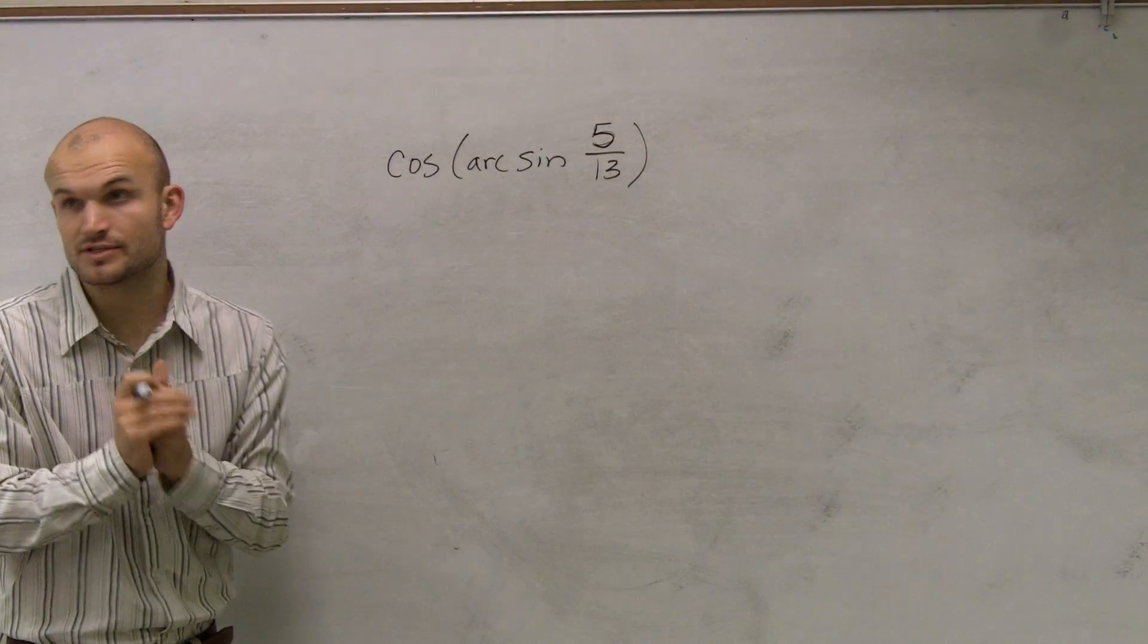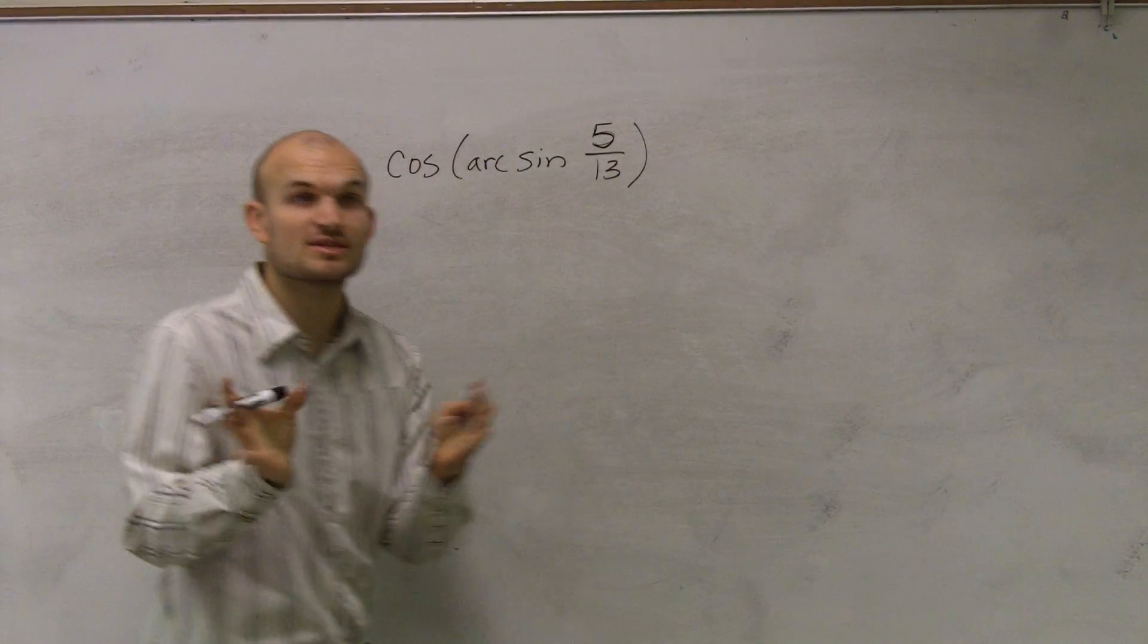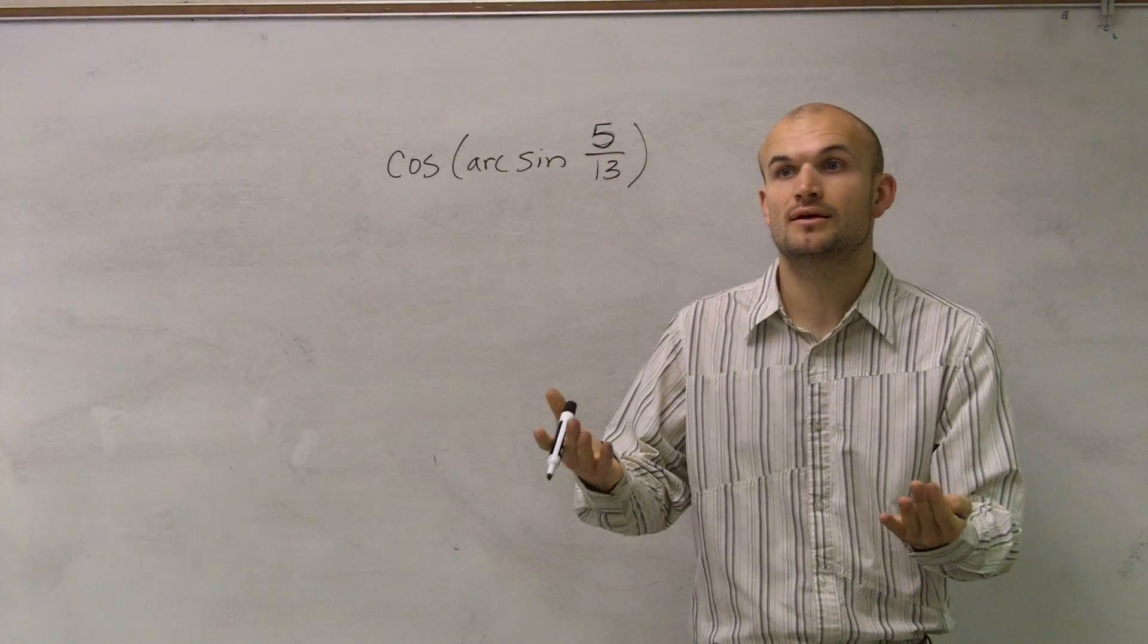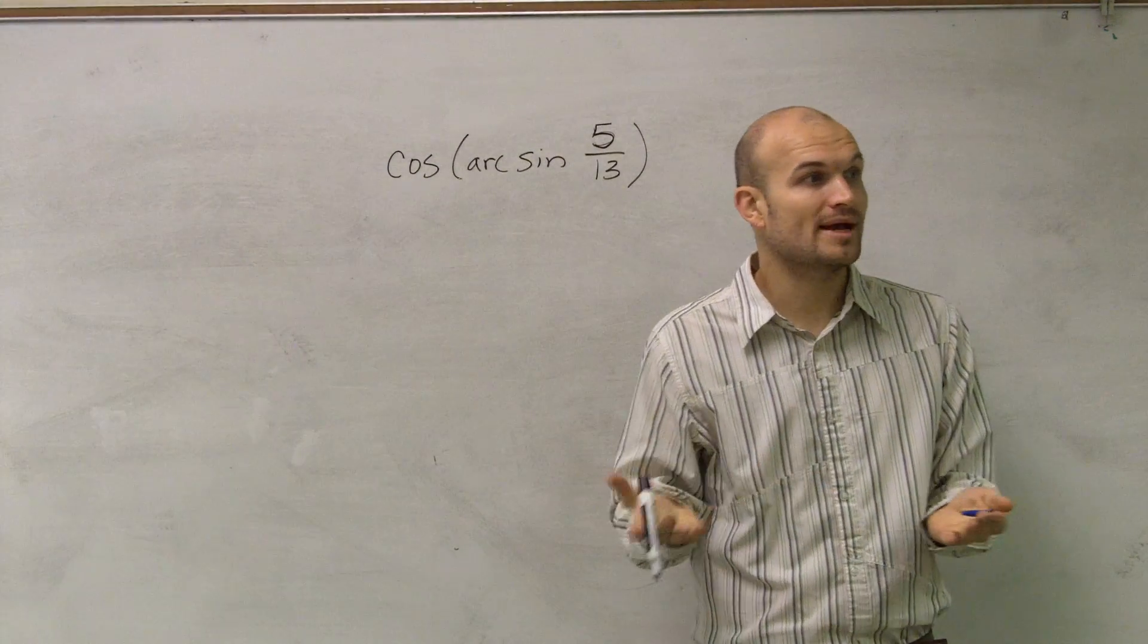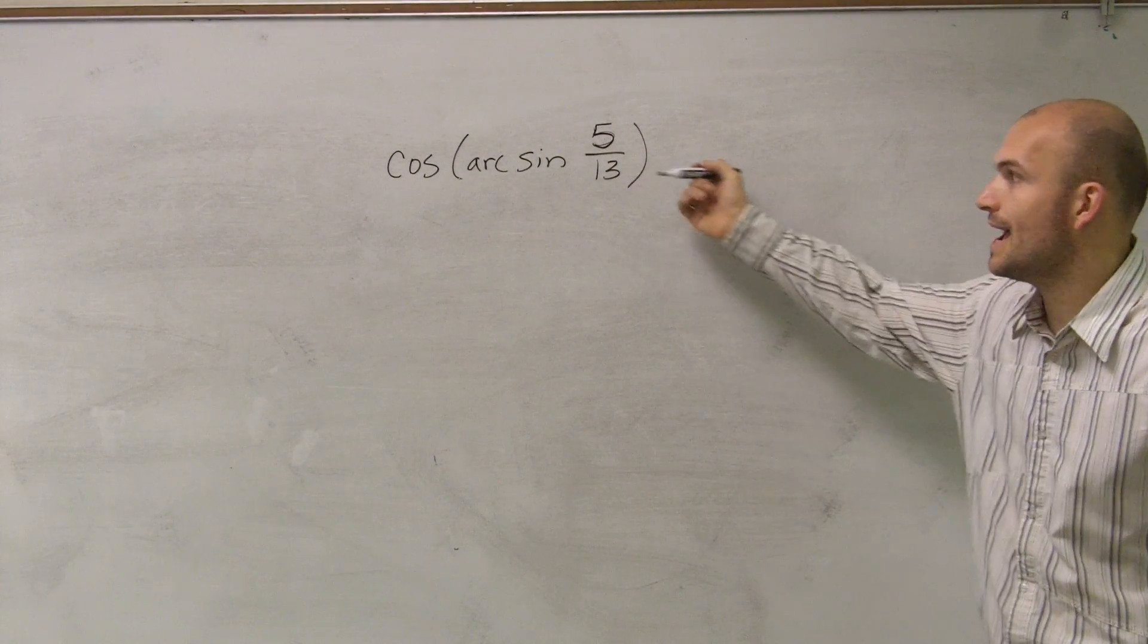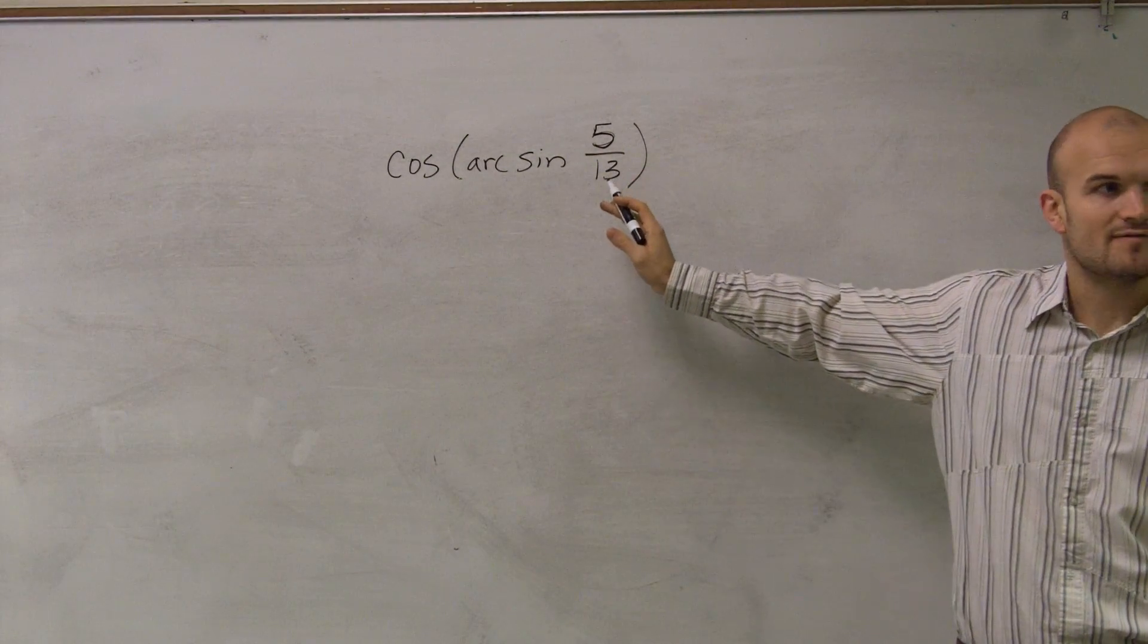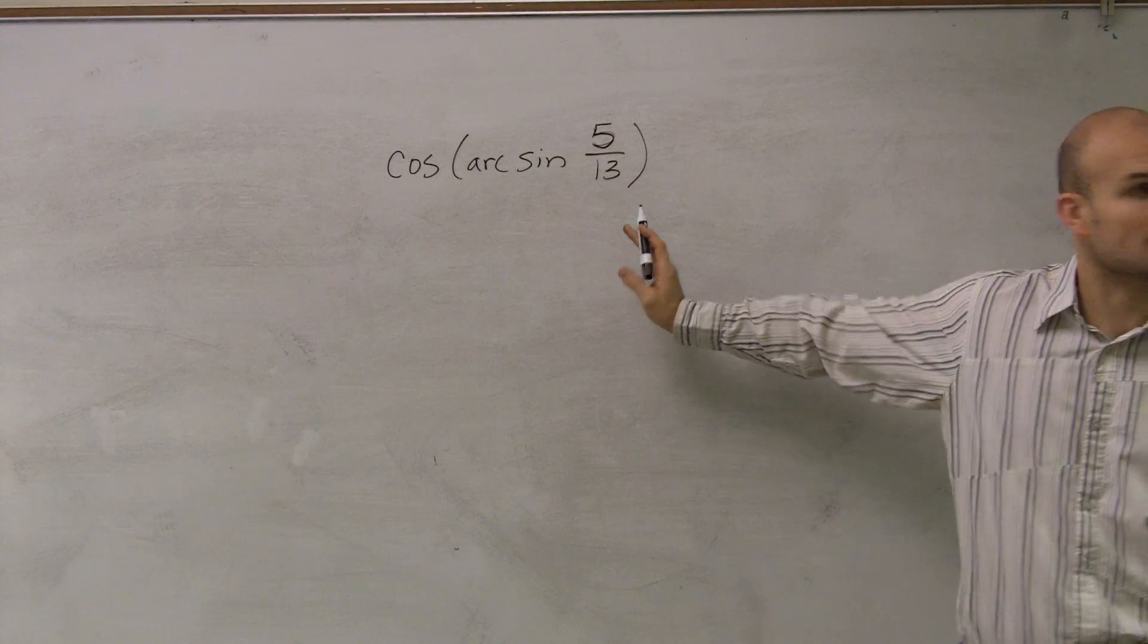We need to find the inverse sine of 5 over 13. Remember we were talking about how sine was your y-coordinate of your unit circle because it was y over 1. Now, our radius, we don't have. This is not on the unit circle. 5 over 13 is not going to be a point on the unit circle.